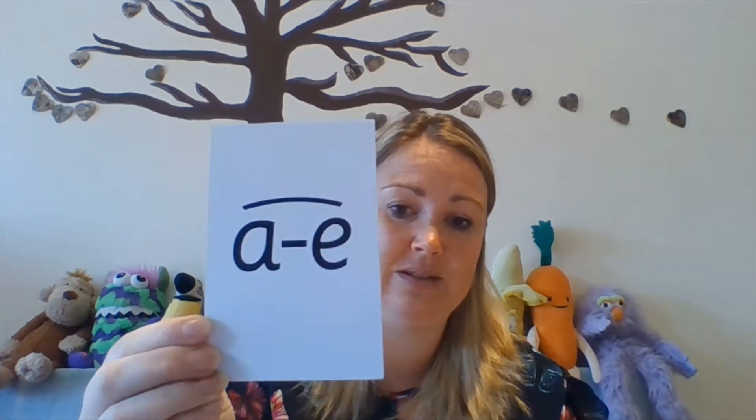Here is Set Three sounds — hopefully this will help you. There's a combination in Set Three of what we call special friends: the two sounds, the digraphs and the trigraphs. However, we also have split digraphs, and we explain to the children that they are split digraphs to help them understand the knowledge.